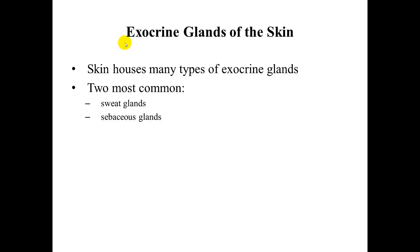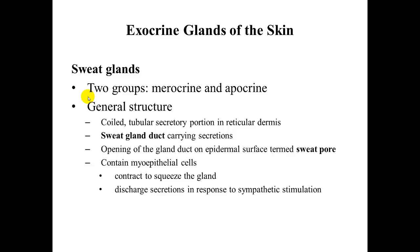Finally, let's look at the exocrine glands of the skin. There are many types, but the two most common are sweat and sebaceous glands. There are two groups of sweat glands: merocrine — also called eccrine — and apocrine. They are coiled tubes that secrete in the reticular dermis, with a gland duct that carries secretions to a sweat pore on the epidermal surface.